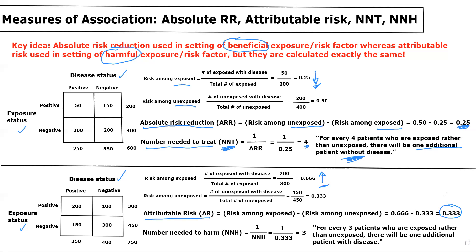Because the exposure is harmful and we're calculating an attributable risk, we then will be dealing with a number needed to harm, which is calculated as 1 divided by the attributable risk. The attributable risk is the risk among the exposed minus the risk among the unexposed — 0.666 minus 0.333 — which is 0.333 or one-third. So the number needed to harm is 1 over 0.333, which equals 3, with the interpretation being: for every three patients who are exposed rather than unexposed, there will be one additional patient with disease.